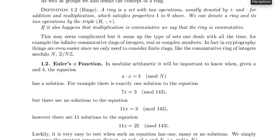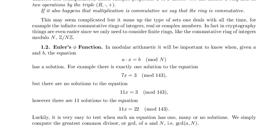For example, there is exactly one solution to the equation 7x equals 3 mod 143. But there are no solutions to the equation 11x equals 3 mod 143. However, there are 11 solutions to the equation 11x equals 22 mod 143.